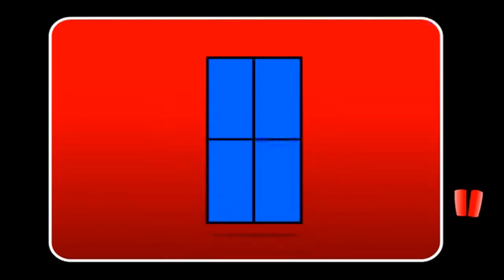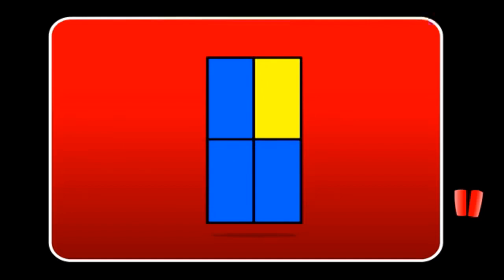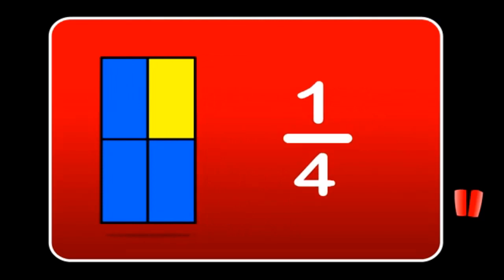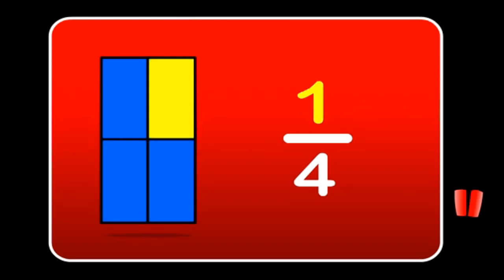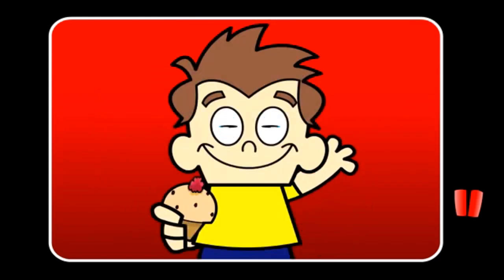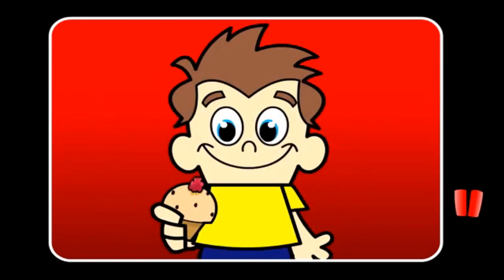Shapes can be cut into quarters too. Here is a rectangle cut into four equal parts — each part is called a quarter. If one part is colored, we say one quarter is colored. We can write it using words — 'one quarter' — or numbers: one over four. This means one part out of every four parts is colored. When we use fractions, the number of parts in total is on the bottom, and the number of parts colored is on the top.